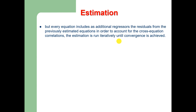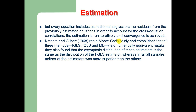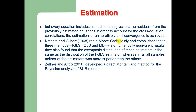Resulta, Comenta, and Gilbert ran a Monte Carlo study and established that all three methods — IGLS, IOLS, and ML — yield numerically equivalent results. They also found that the asymptotic distribution of these estimators is the same as the distribution of the FGLS estimator, whereas in small samples neither of the estimators was more superior than the others.